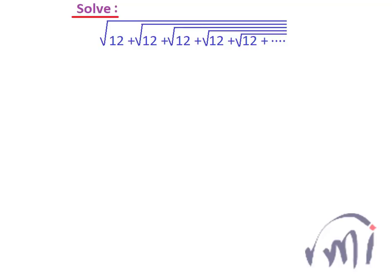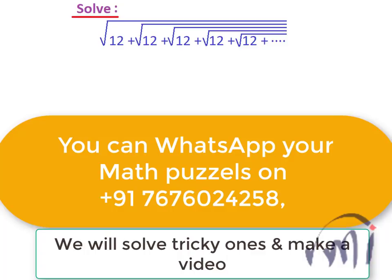Hi, so here we are going to solve this problem which looks pretty difficult but actually it is very easy to solve. So here we have to find the value of square root of 12 plus square root of 12 plus square root of 12 plus square root of 12, and this continues infinitely. So how to solve these kind of problems?